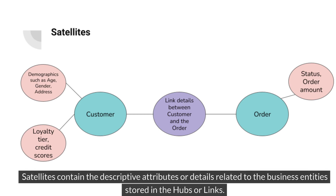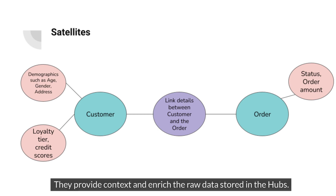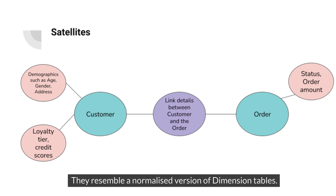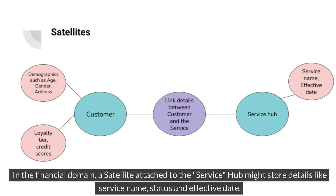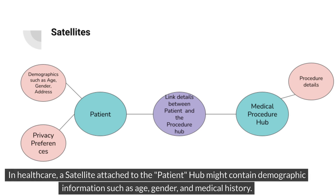Satellites contain the descriptive attributes or details related to the business entities stored in the hubs or links. They provide context and enrich the raw data stored in the hubs, and they resemble a normalized version of dimension tables. For instance, a customer hub may feature multiple satellite tables, each containing information like customer geographical attributes, credit scores, loyalty tiers, and more. In the financial domain, a satellite attached to the service hub might store details like service name, status, and effective date. In healthcare, a satellite attached to the patient hub might contain demographic information such as age, gender, and medical history.